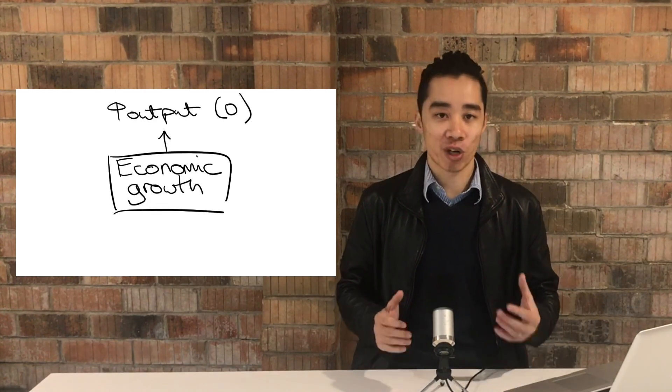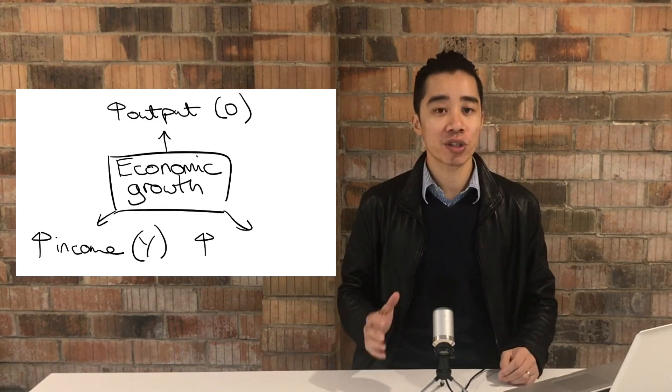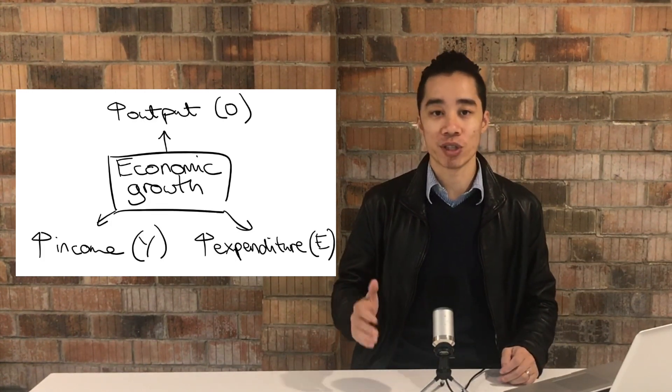Economic growth means an increase in production and it's also associated with increased incomes and spending. Today I'll be giving an overview on a range of impacts that economic growth can have. What I'm going to go through today might appear to be quite brief and general. That's because my plan is to eventually dedicate one video for each of the links between economic growth and the other issues. That's where I'll unpack the links in a lot more detail and depth.